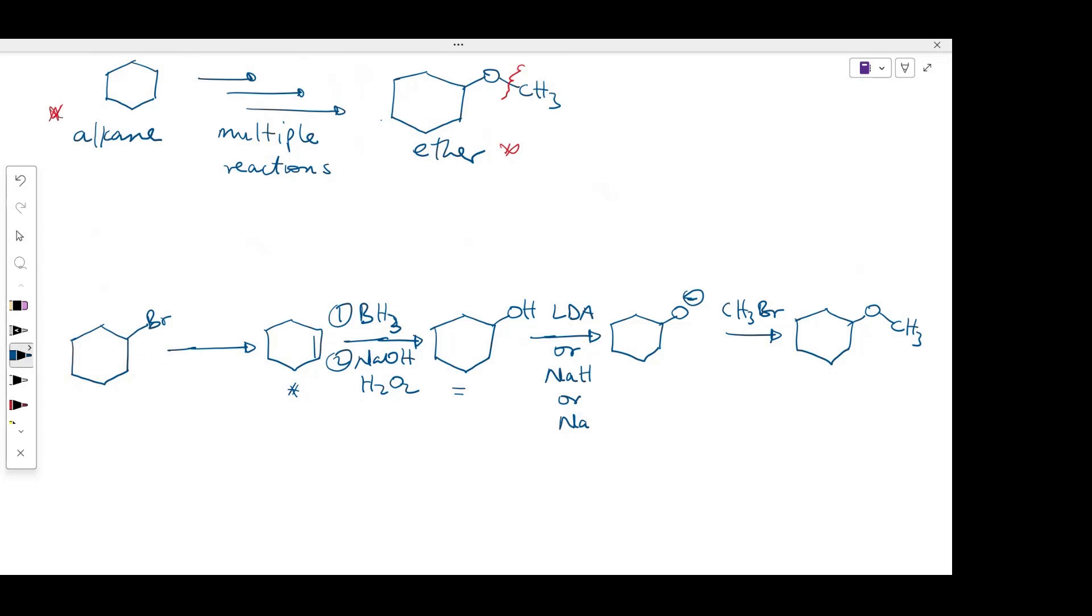Now I need to use a very strong base. So if I were to perform an E2 mechanism or E2 reaction, I could just use a bulky base, potassium tert-butoxide. This reaction will go through E2 mechanism.